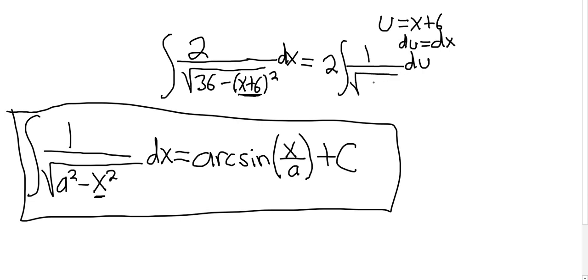And the 36, we can write that as 6 squared. That way it matches what we have here on the left. It matches the a squared. So you see a is equal to 6. Minus, and then the x plus 6 just becomes our u. Good stuff.